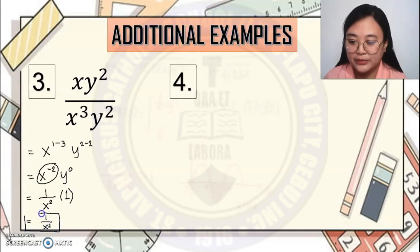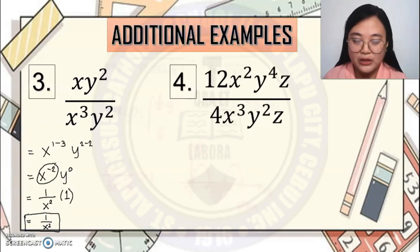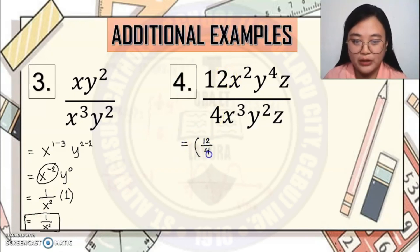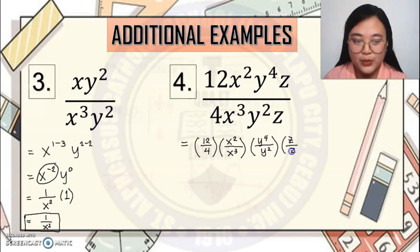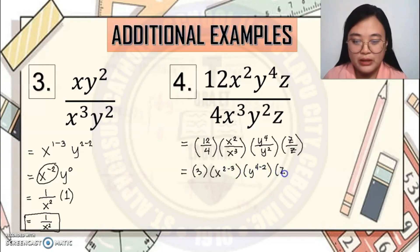Number 4: 12x squared y to the 4th z over 4x cubed y squared z. Divide 12 by 4, then subtract exponents for each base — x to the 2 minus 3, y to the 4 minus 2, and z to the 1 minus 1. So: 3 times x to the negative 1, times y squared, times z to the 0. Converting the negative exponent and the zero exponent, the final answer is 3y squared over x.